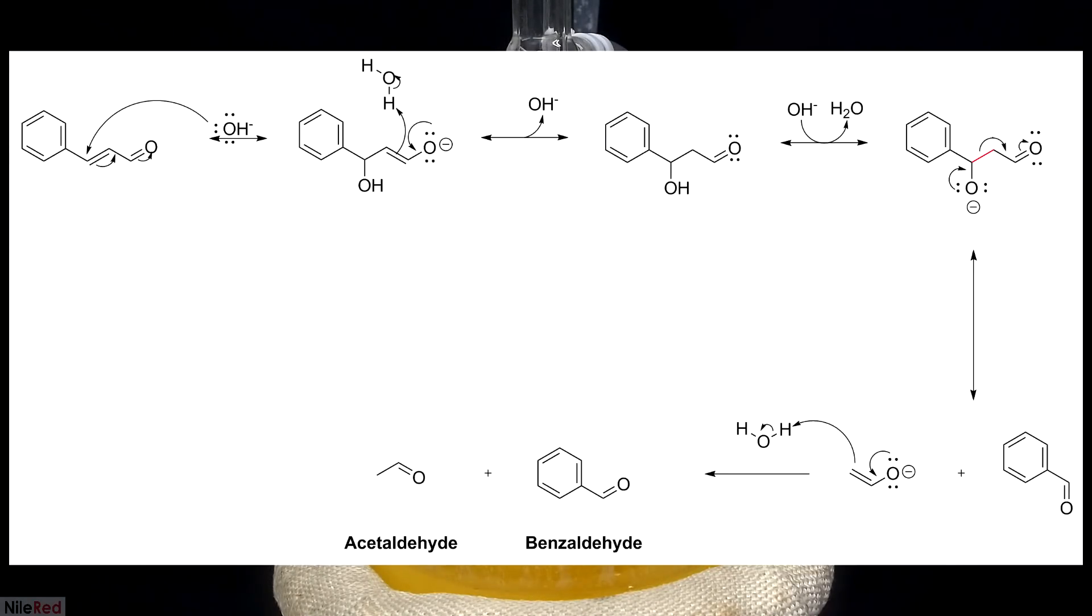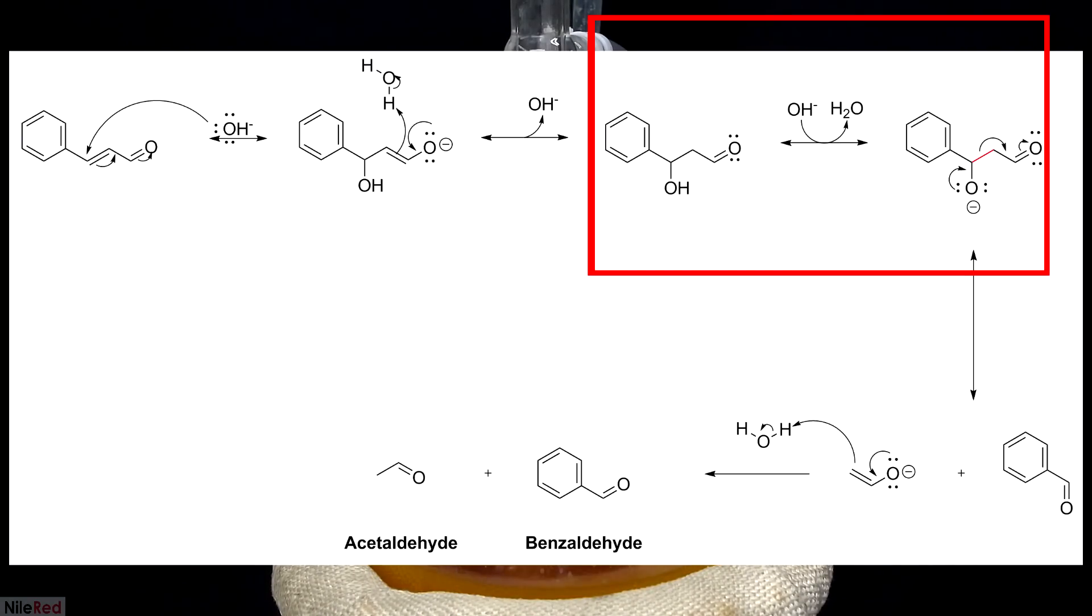In terms of the mechanism, it's pretty much the exact opposite of the normal aldol reaction and I'll just go over it quickly. Under the basic conditions, a hydroxide ion first attacks the double bond and a carbon-oxygen bond is formed. The oxygen double bond that was lost is then regenerated by pulling a hydrogen from water. Another hydroxide ion comes along and deprotonates the hydroxide group. The electrons on the oxygen move to form a carbon-oxygen double bond and the carbon-carbon bond marked in red is broken.